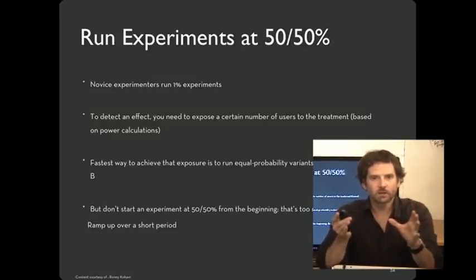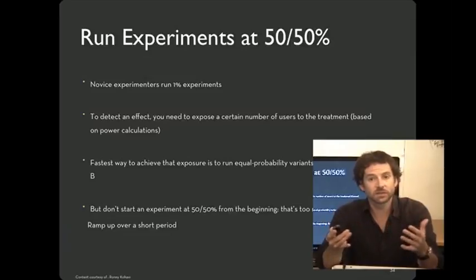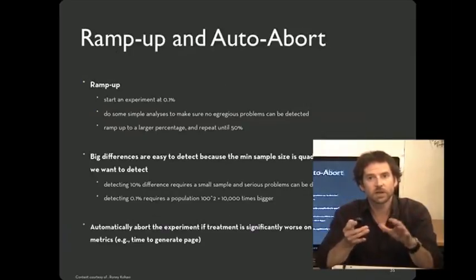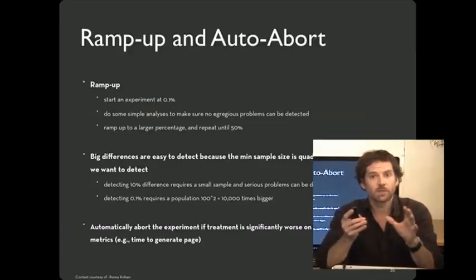The reason that you want to get ultimately to having an equal number of people in each condition is it's the fastest way to be able to detect an effect if your design is causing a change that matters. However, you don't want to start out at 50-50 initially. What you want to do initially is ramp things up, and the reason for that is your design may be disastrous.